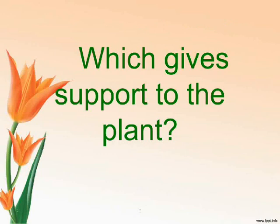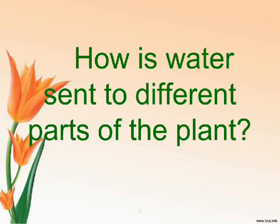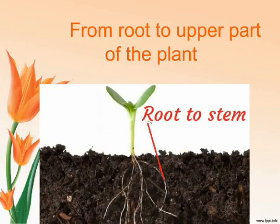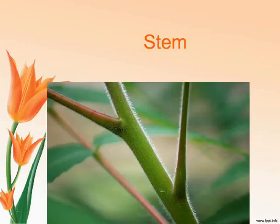Which gives support to the plant? Root. How is water sent to different parts of the plant? From root to upper part of the plant. Which part carries water and food to all parts of the plant? Stem.